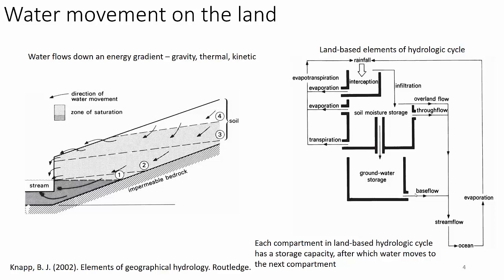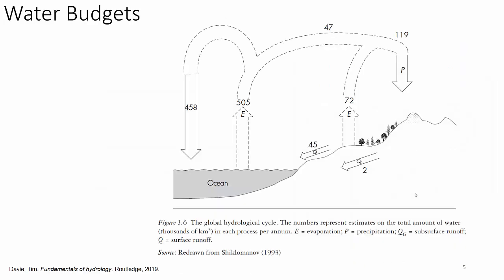Water flows down an energy gradient. You can pump it uphill if you put more energy into it, but generally gravity pulls it downhill, down gradient. The water balance is fairly well defined. The water running off the land, Q, and the water running through groundwater, Q sub G, is a function of precipitation minus all the abstractions on the landscape. The biggest one of those abstractions, of course, is evaporation — and evaporation drives the whole process.